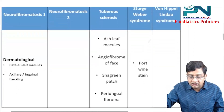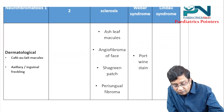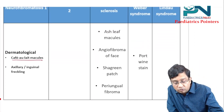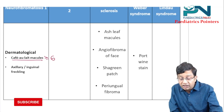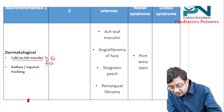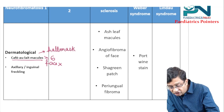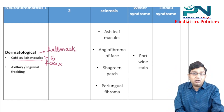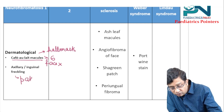Now the dermatological manifestations. In NF1, there are café-au-lait macules, which should be six or more in number, and they are never present on the face — they are considered the hallmark feature. Axillary or inguinal freckling is considered pathognomonic.